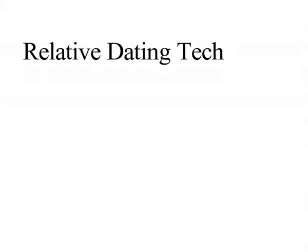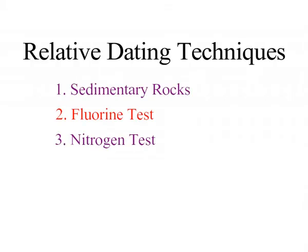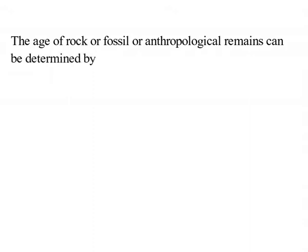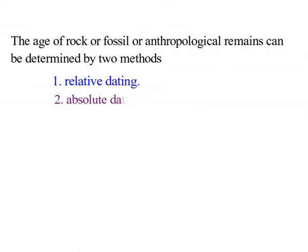Hello friends, today we are going to discuss the relative dating techniques. The age of a rock, fossil, or anthropological remains can be determined by two methods: relative and absolute dating.